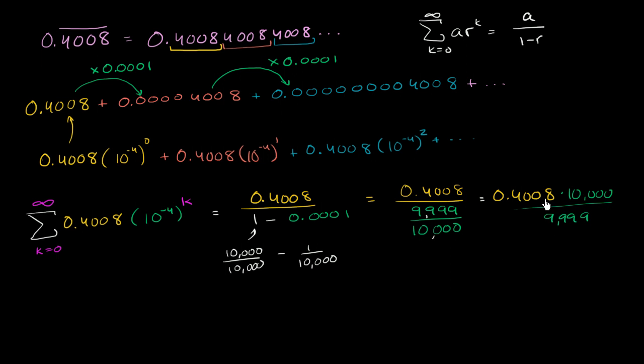And so this is going to be the same thing as 0.4008 times 10,000, so times 10,000 over 9,999. Well, what's this top number times 10,000? Well, that's just going to give us 4,008 over 9,999. And we've just expressed that repeating decimal as a fraction. So we have succeeded, and you might say, well, maybe we can simplify this thing. So if we add the digits up here, 4 plus 8 is 12, and 1 plus 2 is 3, so this up here is divisible by 3.